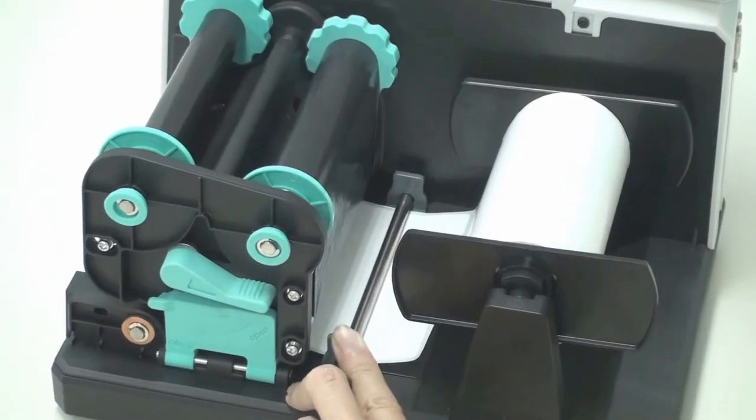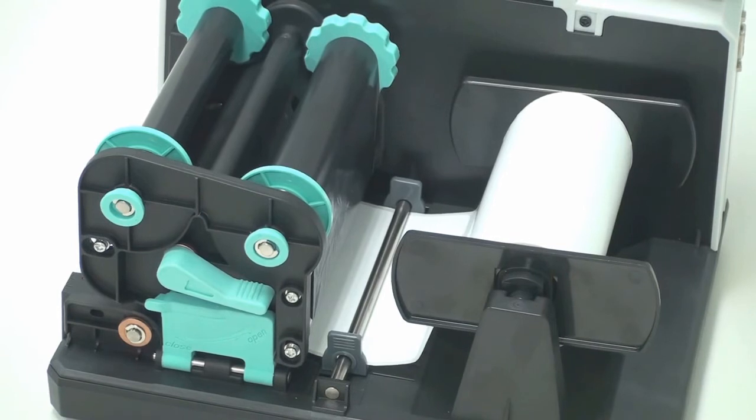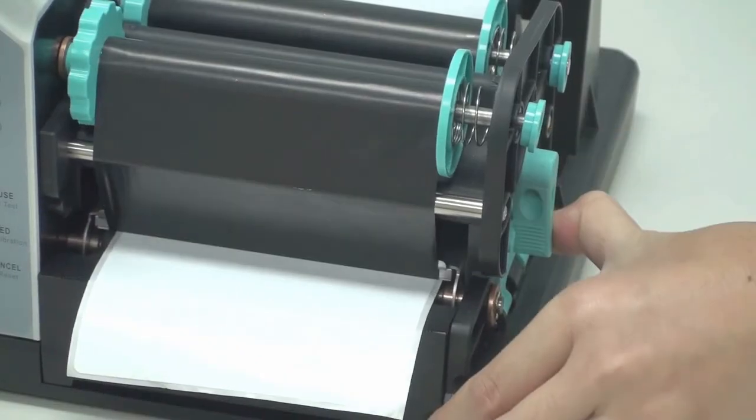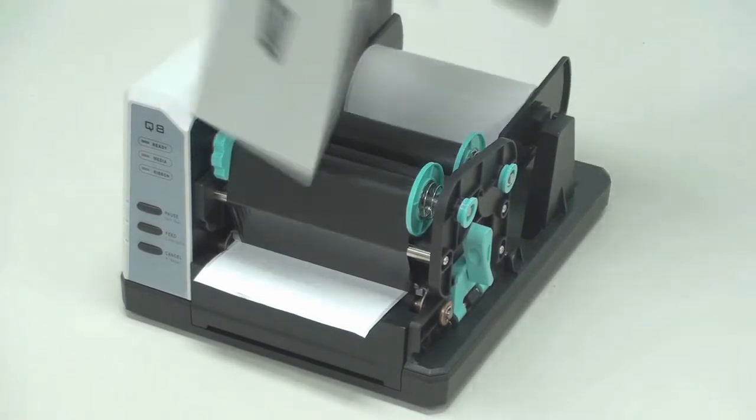Now, slide the media guides to each edge of the media, making sure not to squeeze the labels. Labels should remain flat and centered. Twist the green handle clockwise to close the print head module and close the cover. The media is now loaded.